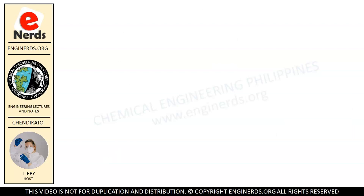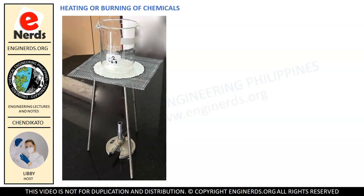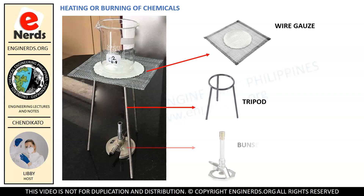The next laboratory apparatus and tools are better understood if you know how they are used. Have a look at the photograph. The tools we will be discussing next are those used in heating containers and chemicals. We have here the wire gauze, the tripod, and the Bunsen burner. These three are commonly used together, though other applications are also possible.